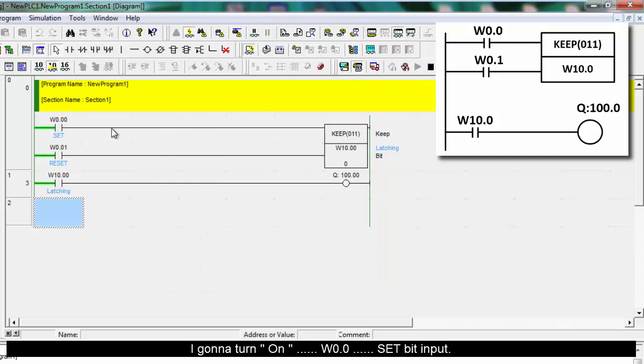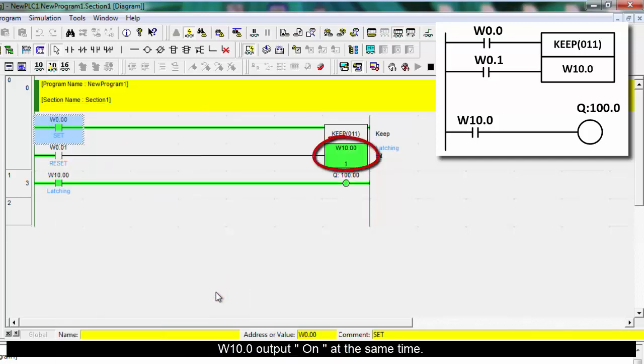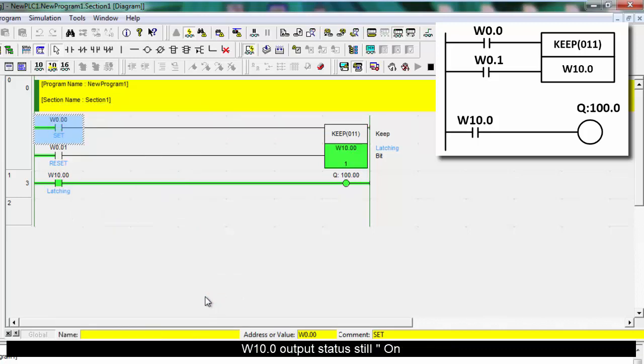I'm gonna turn on W 0.0 set bit input. W 10.0 output on at the same time. I'm gonna turn off W 0.0 set bit input. W 10.0 output holds state.